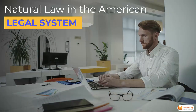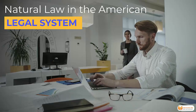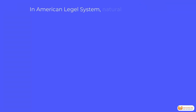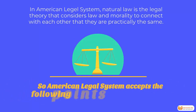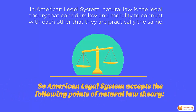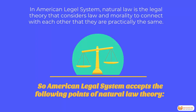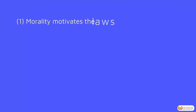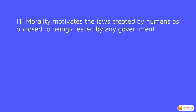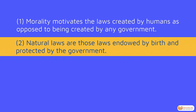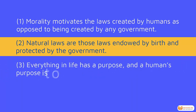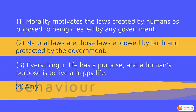Natural law and the American legal system. In the American legal system, natural law is the legal theory that considers law and morality to connect with each other — that they are practically the same. The American legal system accepts the following points of natural law: morality motivates the laws created by humans, as opposed to being created by any government. Natural laws are those laws endowed and protected. Everything in life has a purpose, and a human's purpose is to live a happy life. Anything that obstructs this is immoral or punishable.